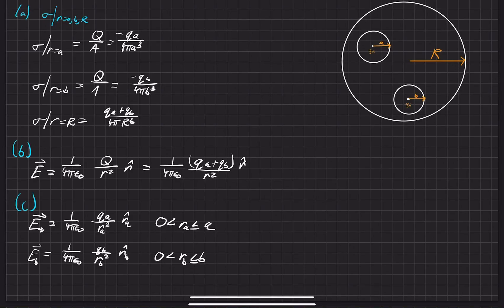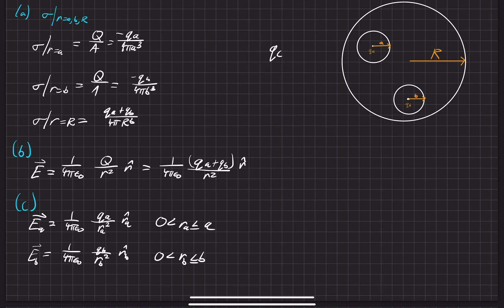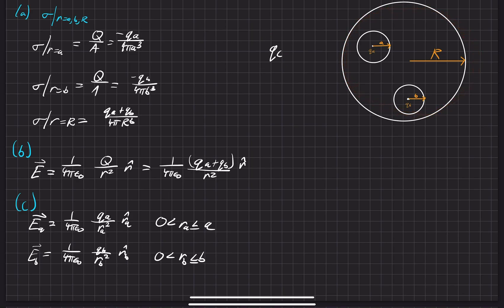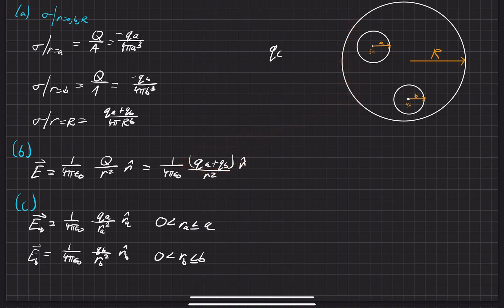In this last part of the problem, our goal is to figure out what happens whenever we bring a charge QC from infinity and bring it closer and closer to this system. This is a neutral conducting sphere — well, it's not neutral anymore when you put these charges in here, because there's an accumulation of positive charges equal to the magnitude of QA plus QC on the outside, as we figured out in the first part of the problem.